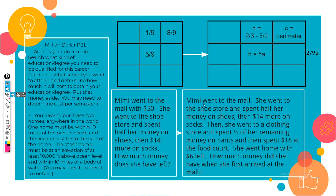In the complex version, Mimi went to the mall. She went to the shoe store and spent half her money on shoes — but how much money did she have to start? I don't know, so I don't know what half her money means. Then she spent $14 more on socks. I don't know how much she had left after spending half, so I can't figure out what she has after spending $14 more. Then she went to a clothing store and spent one third of her remaining money on pants, then spent $18 at the food court. All of this is meaningless to me until — she went home with $6 left. Now I have an ending point: $6. So I know I need to use a problem solving strategy — I need to work backwards.